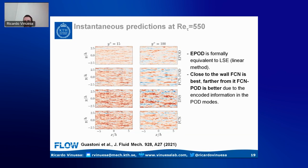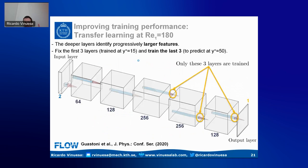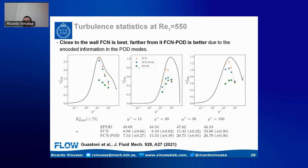Looking at statistics — streamwise, wall-normal, and spanwise velocity fluctuations — we see that the near-wall peak is very well predicted, with less than 1% error using the FCN method. All predictions get worse farther from the wall, but we outperform the linear method. Far from the wall, FCN-POD catches up and becomes better than FCN, achieving 26% error at y+ = 100 while still identifying the location of the dominant structures.